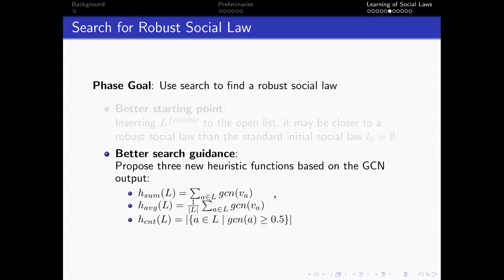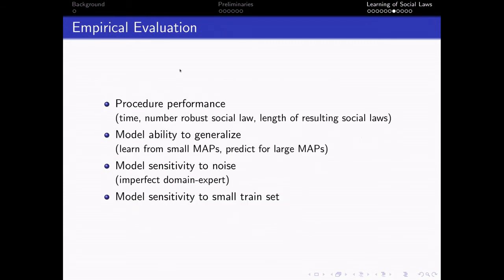Our empirical evaluation focuses on measuring the procedure performance in terms of time and number of robust social law solutions and model ability to generalize. We let the models learn only from small multi-agent problems. We test also the model sensitivity to noise and the model sensitivity to a small training set.